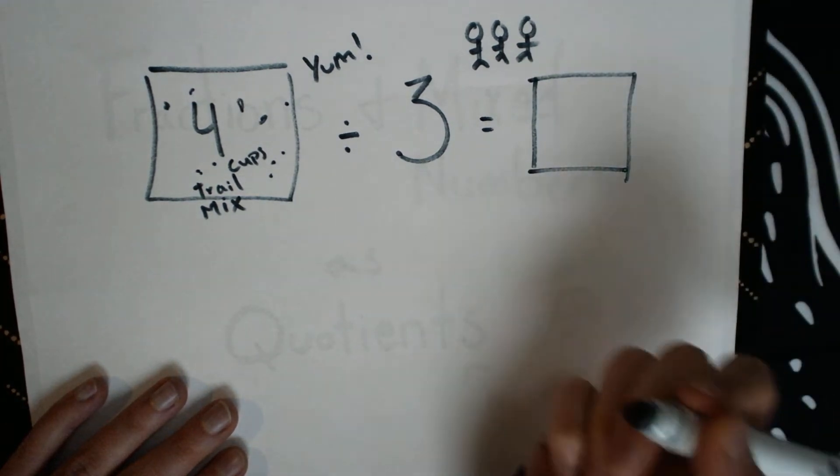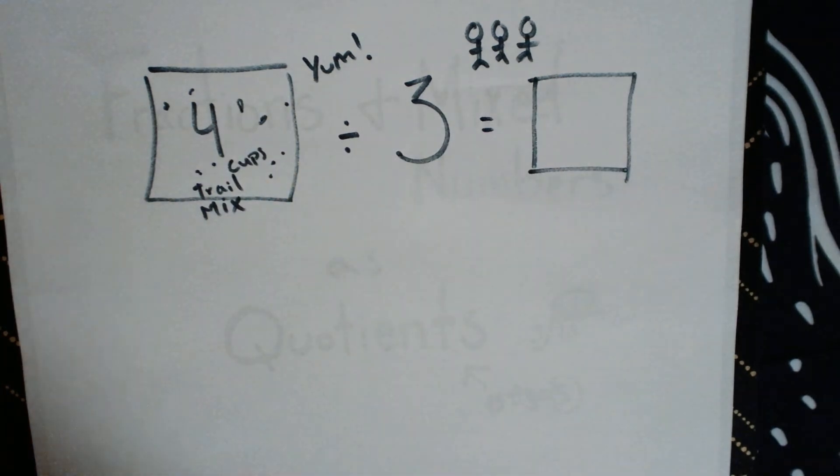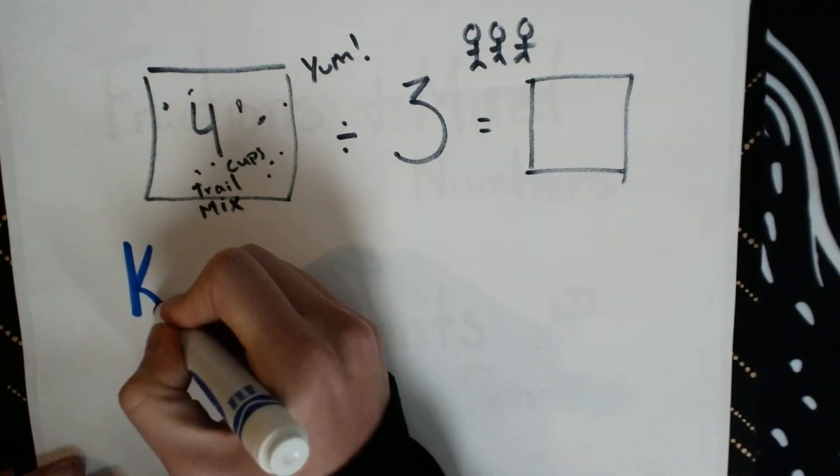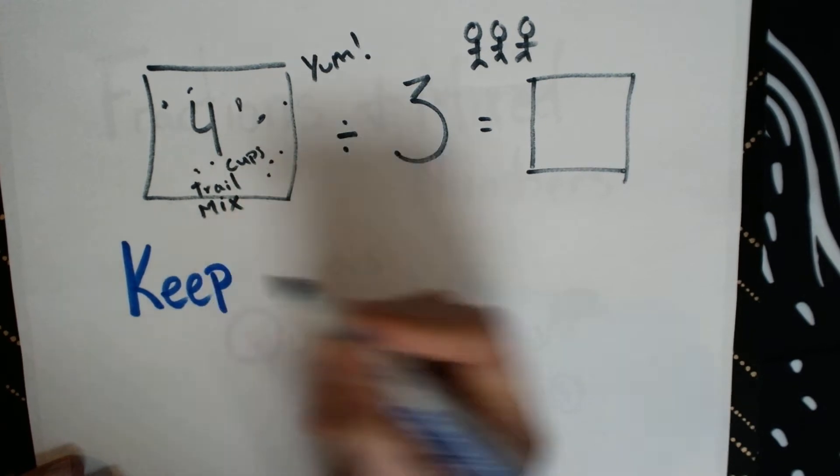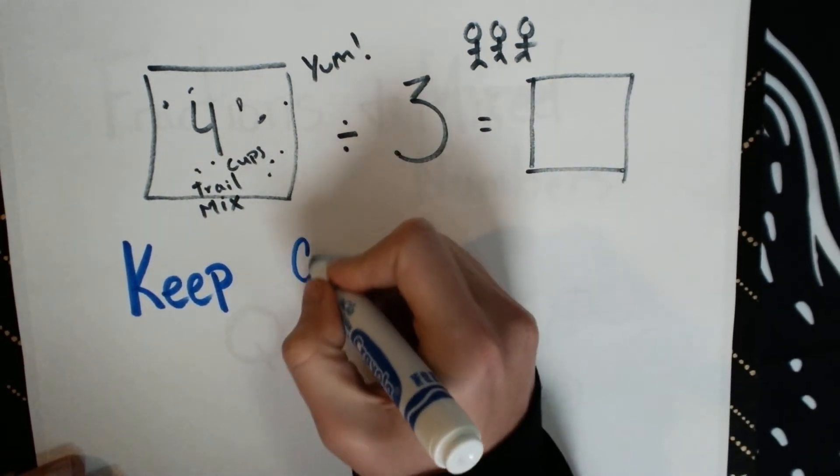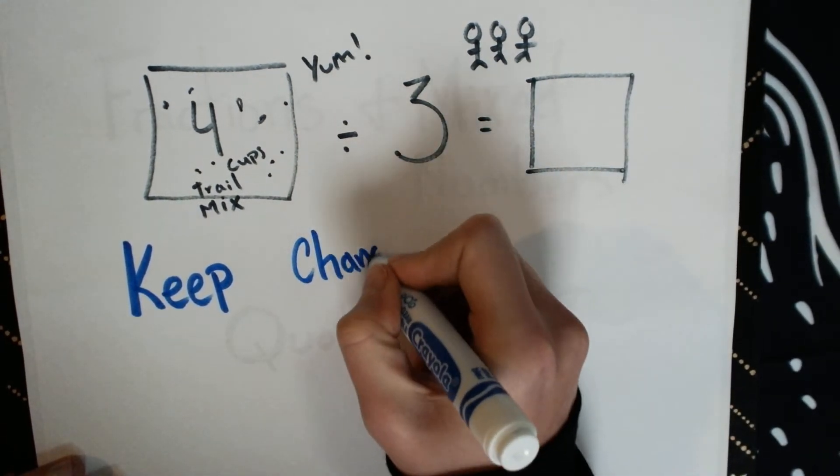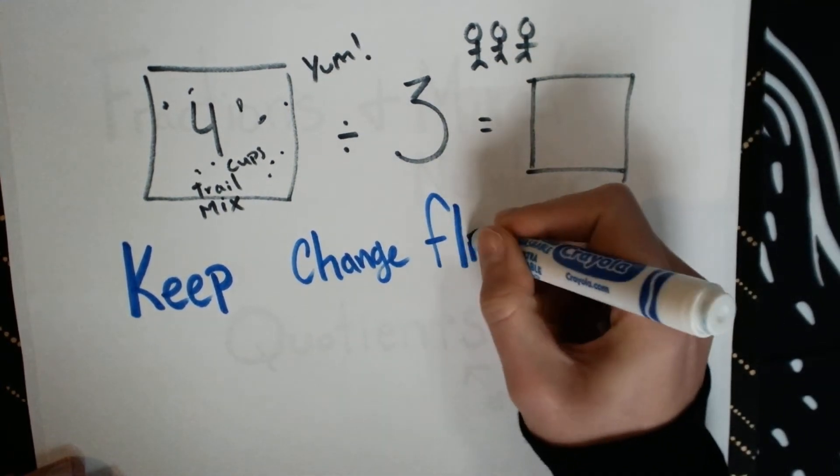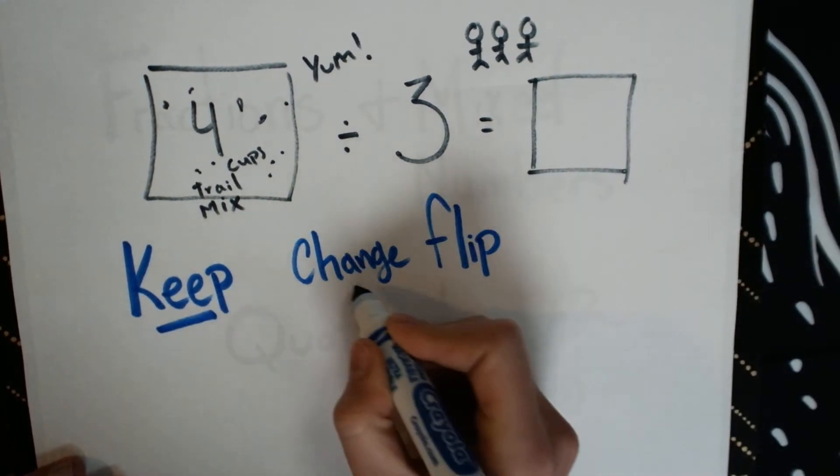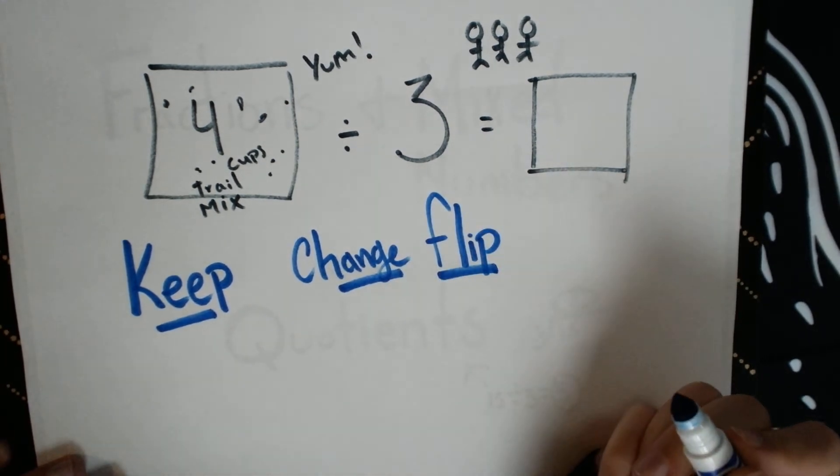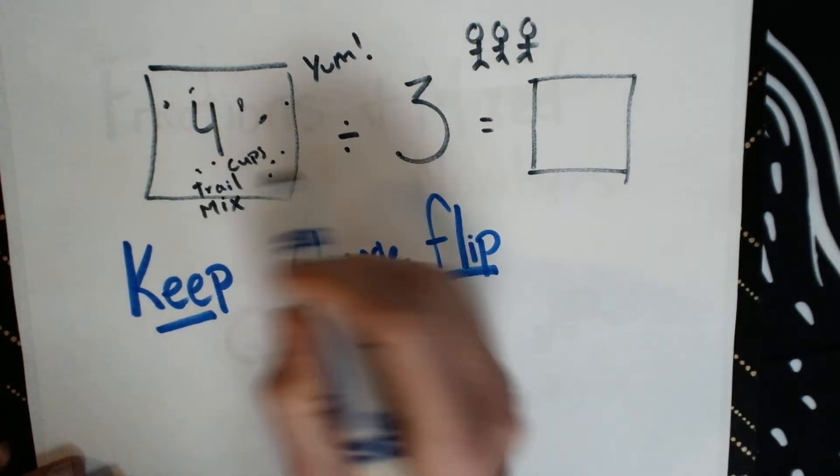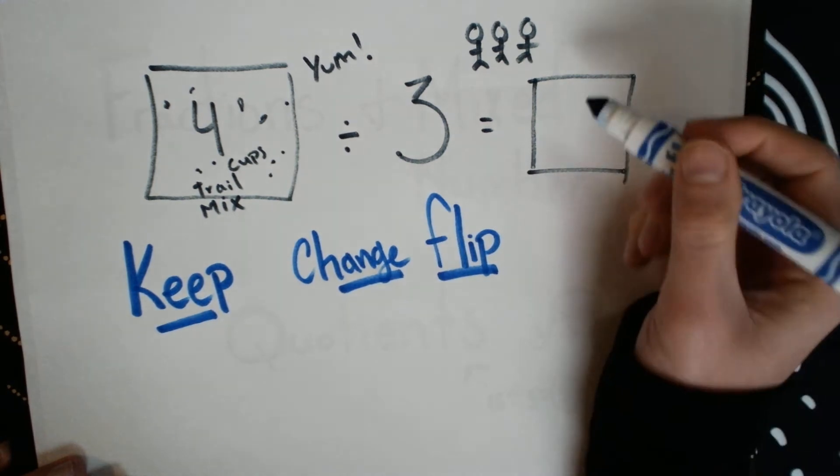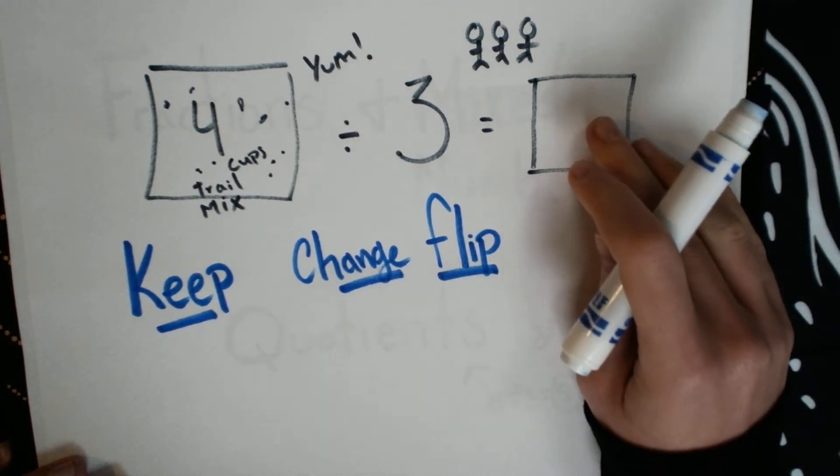I'm going to tell you a strategy that's called keep, change, and flip. Keep, change, flip. This is how we're going to look at dividing numbers that are going to give us a mixed number or something less than a whole in the form of a fraction.